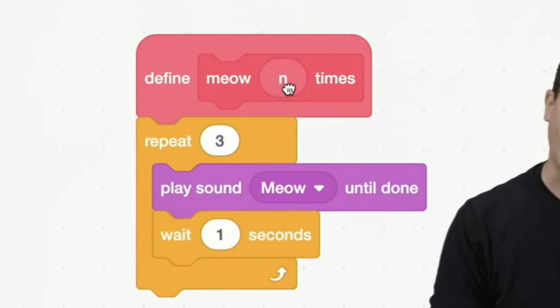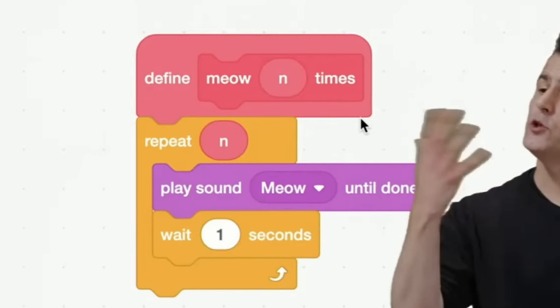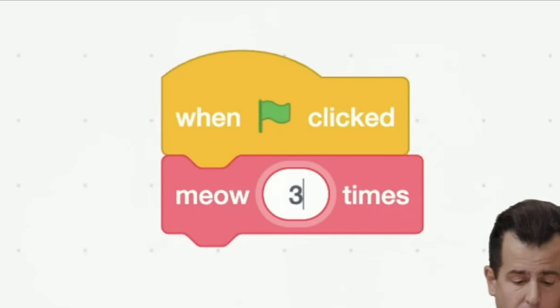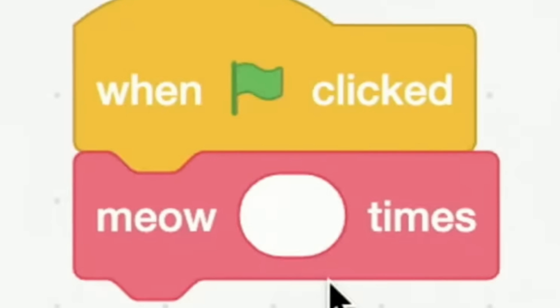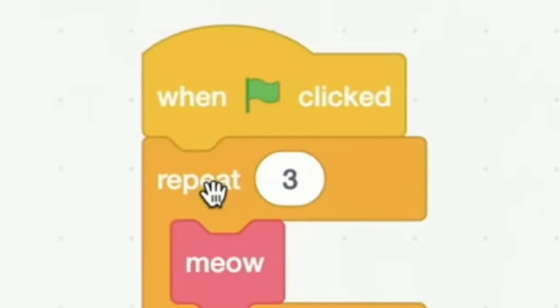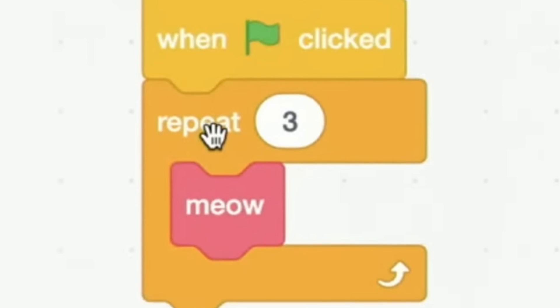With this new addition, Professor Malan makes it so that you're able to set however many times you want the cat to meow whenever you use the custom block, making the code even simpler than before.